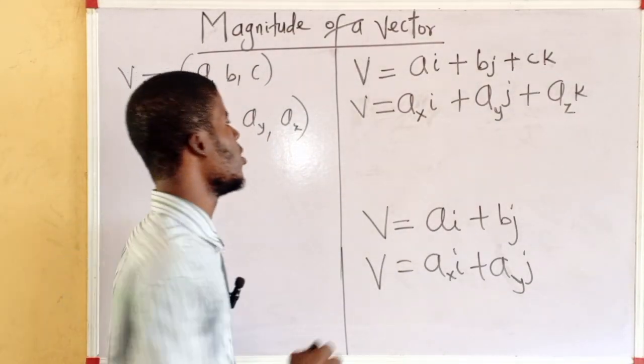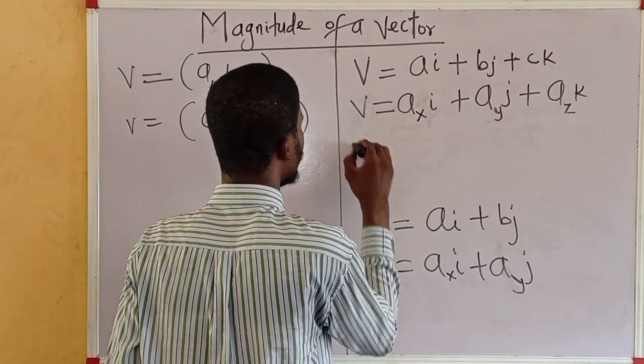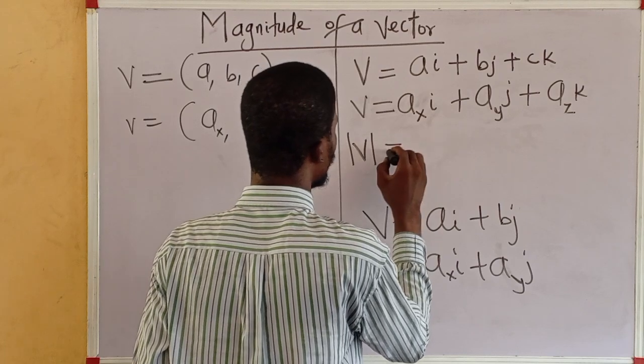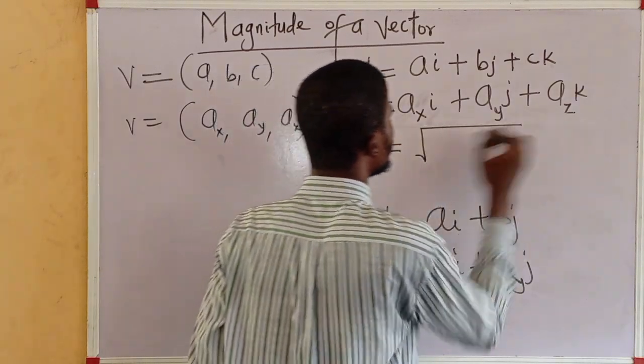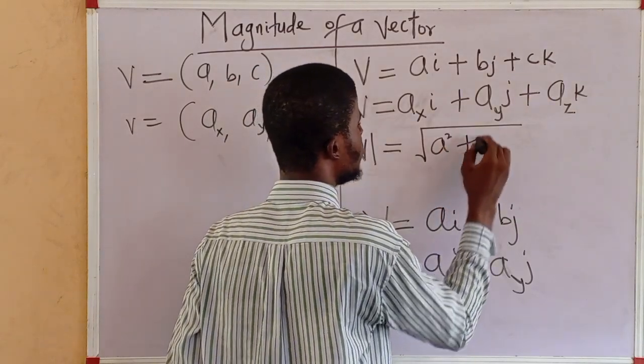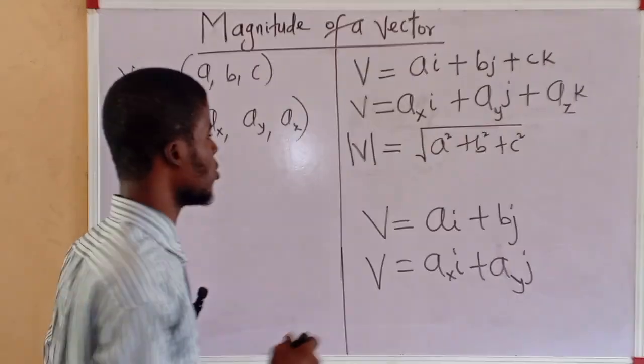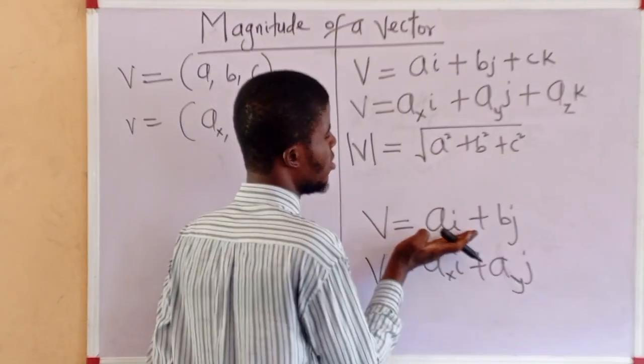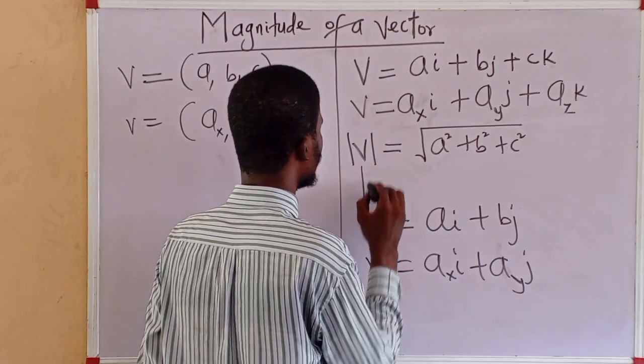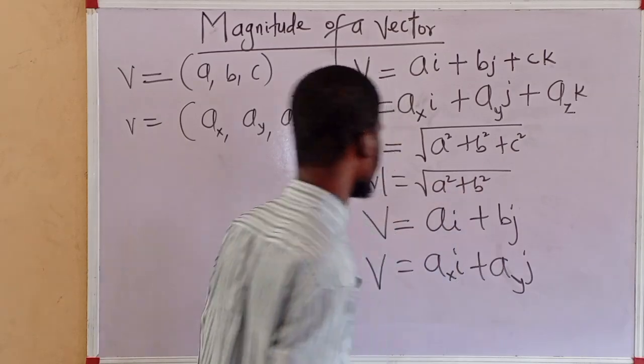So, the magnitude of a vector in three dimensional space, we can say the magnitude or the length or the modulus. It is the positive square root of a squared plus b squared plus c squared. And in two dimension, we have magnitude is equal to the square root of a squared plus b squared. That's it.